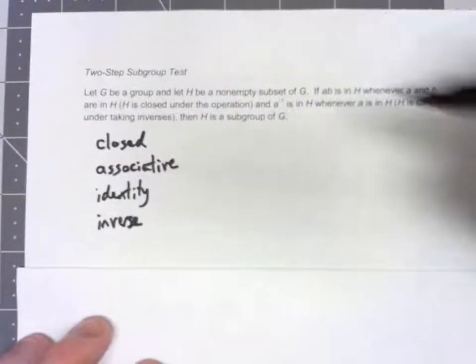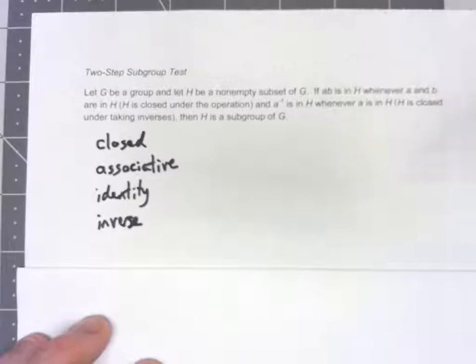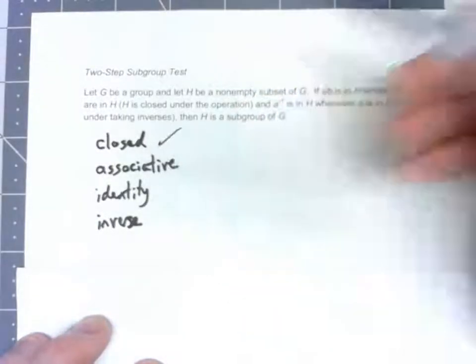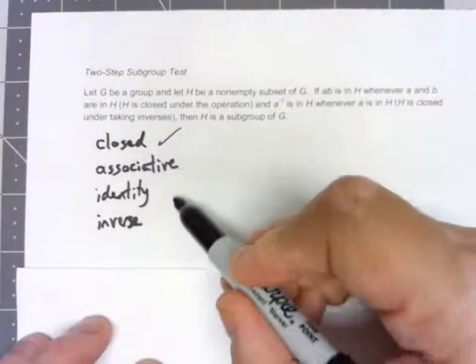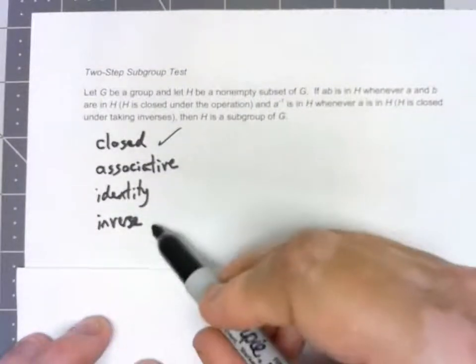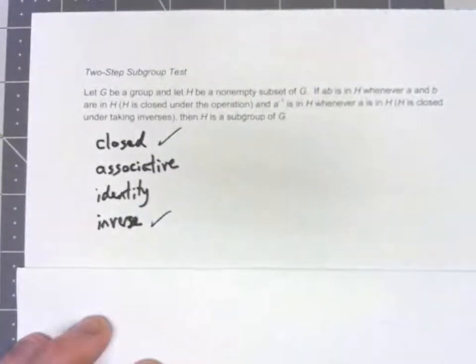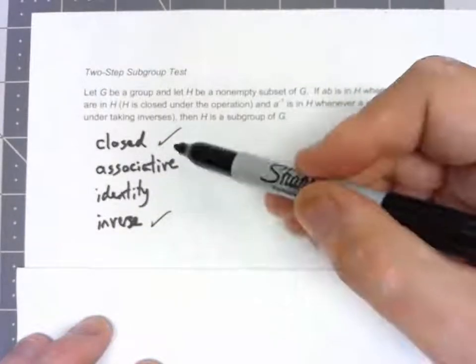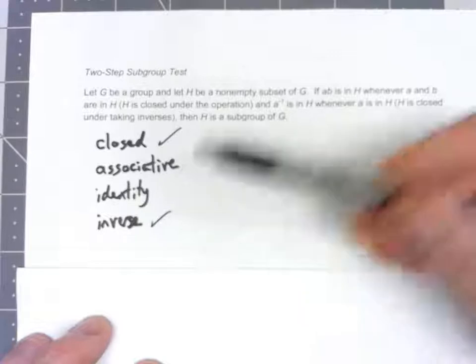Well, right off the bat, we're assuming two of these things, or we need to check two of them. No matter what, we need to check that the thing's closed, and we need to check that the inverses exist. But if I have those two things, the other two I kind of get for free, because we know that this is a subset of G.